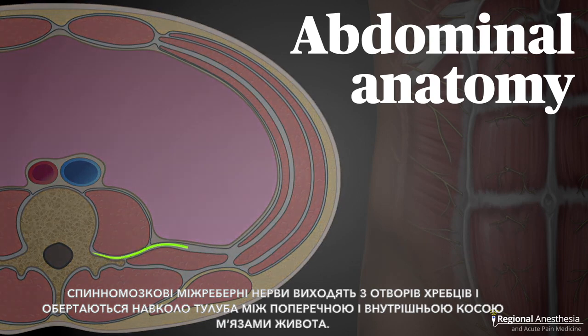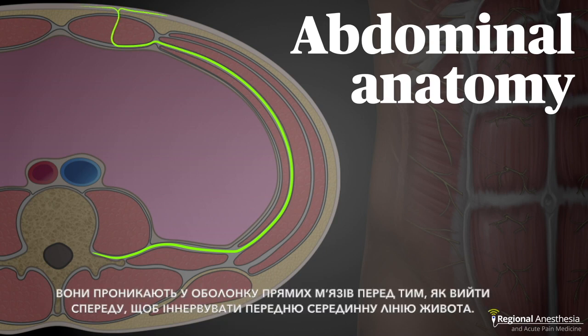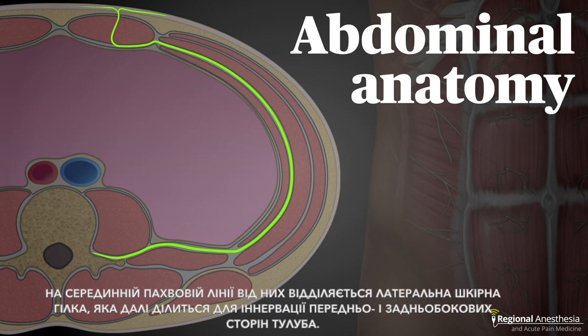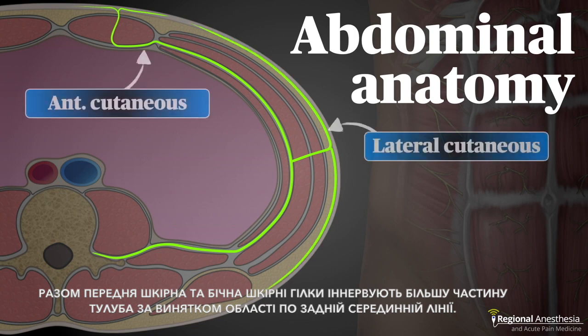The spinal intercostal nerves exit the vertebral foramina and wind their way around the trunk between the transversus abdominis and the internal oblique. They penetrate the rectus sheath before emerging anteriorly to innervate the anterior midline. At the midaxillary line, they also give off a lateral cutaneous branch which divides to innervate the anterior lateral and posterior lateral aspects of the trunk. Together, the anterior cutaneous and lateral cutaneous branches innervate the majority of the truncal surface, minus the area at the posterior midline.